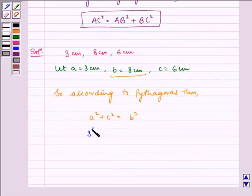a is 3, so 3² plus c is 6, 6² should equal 8².